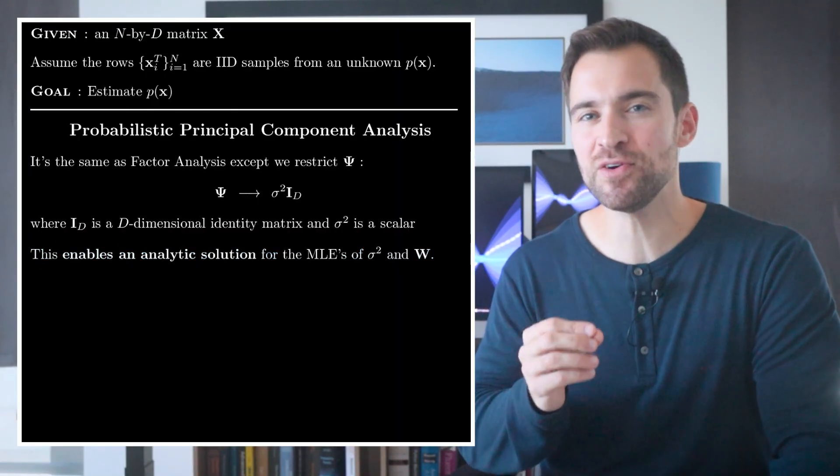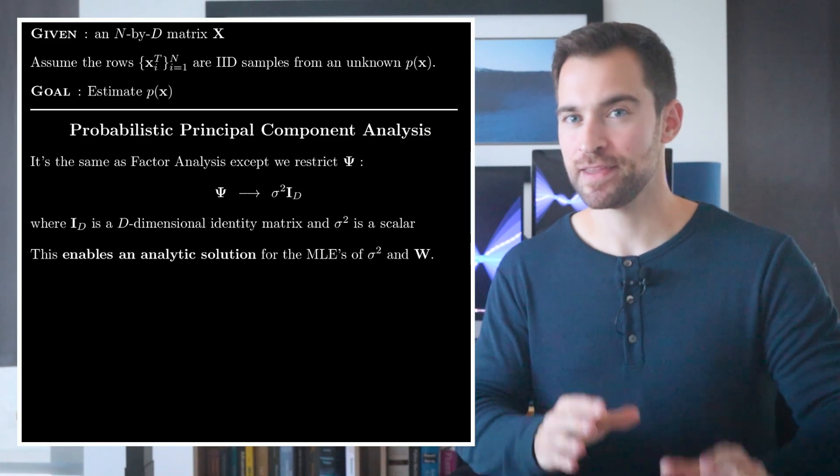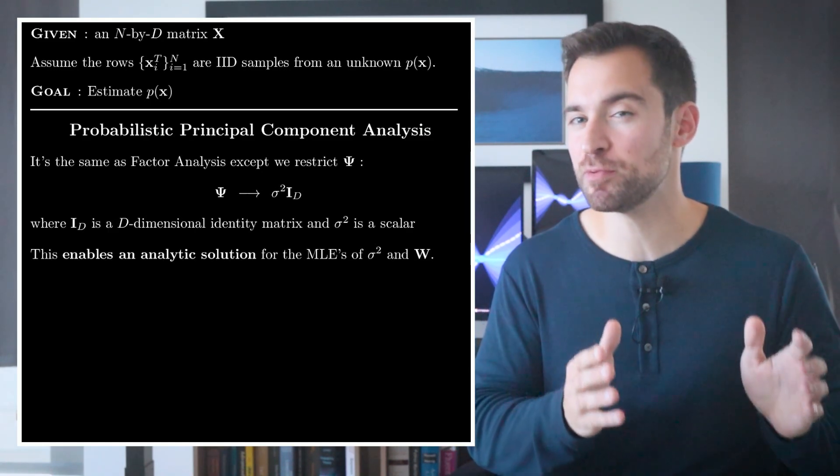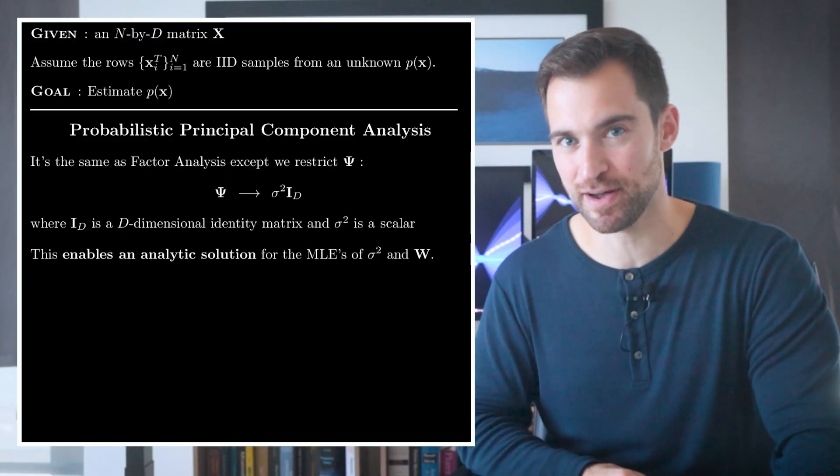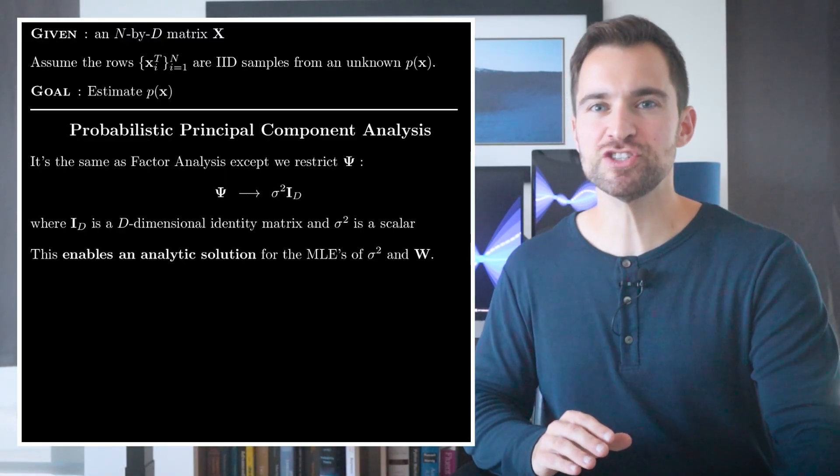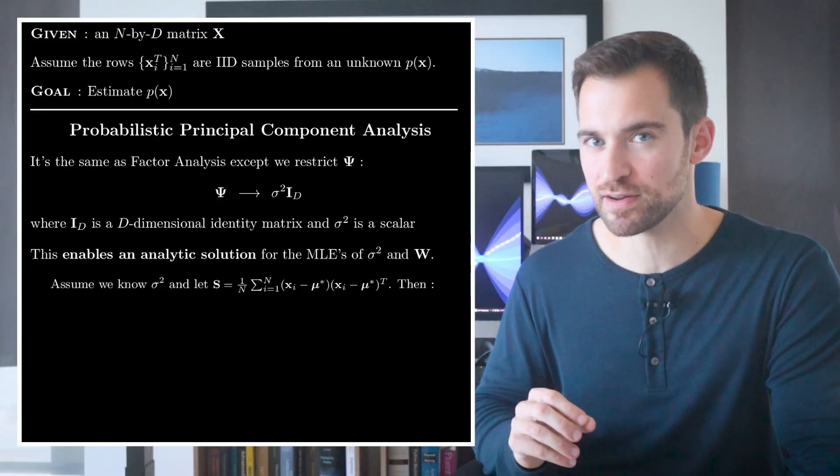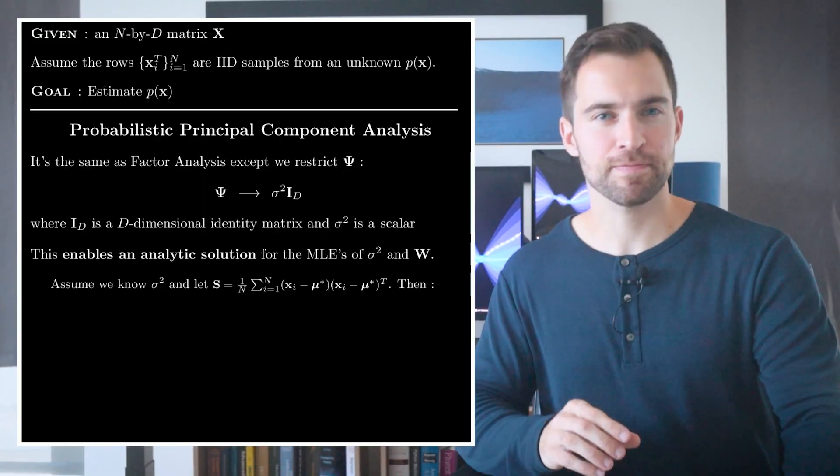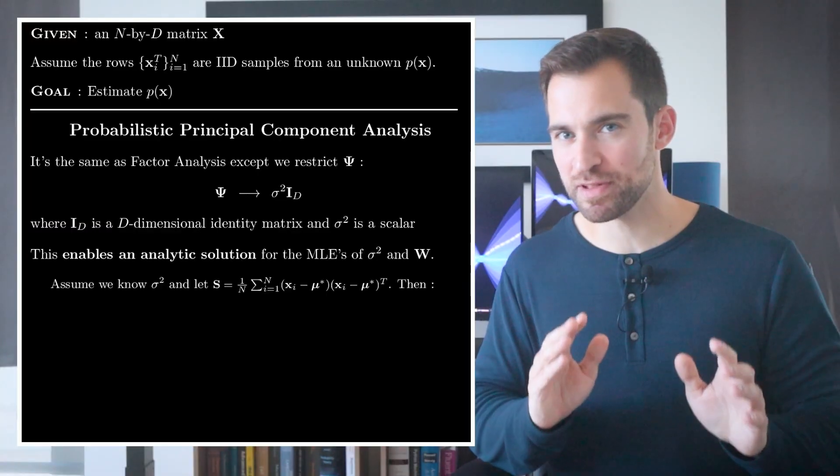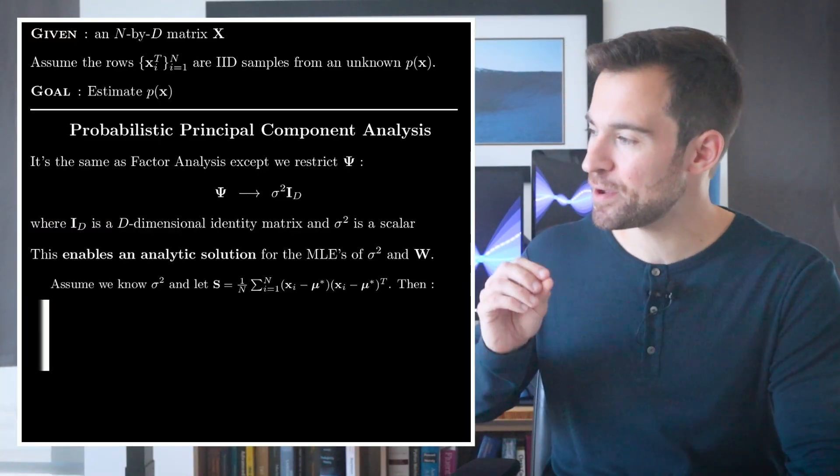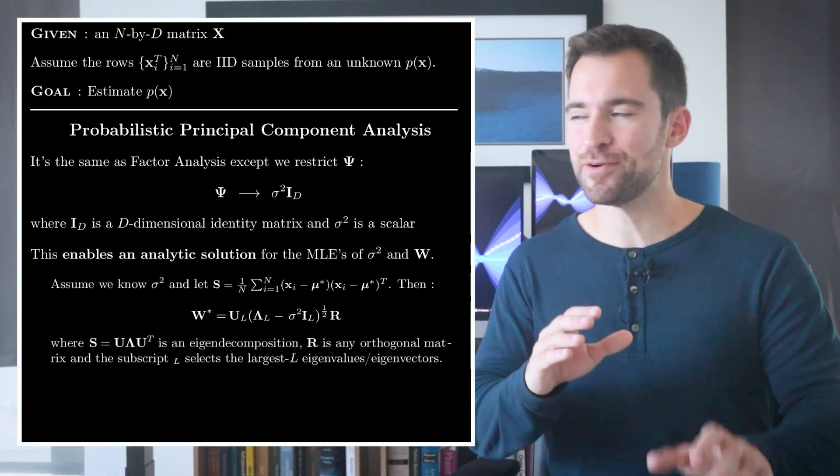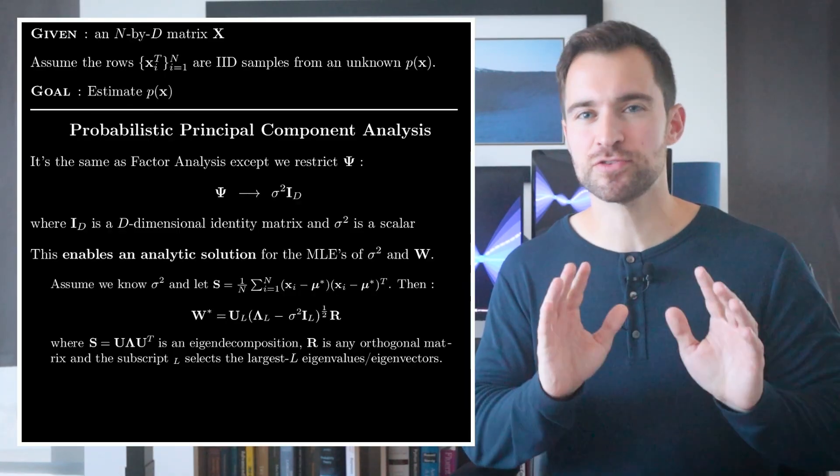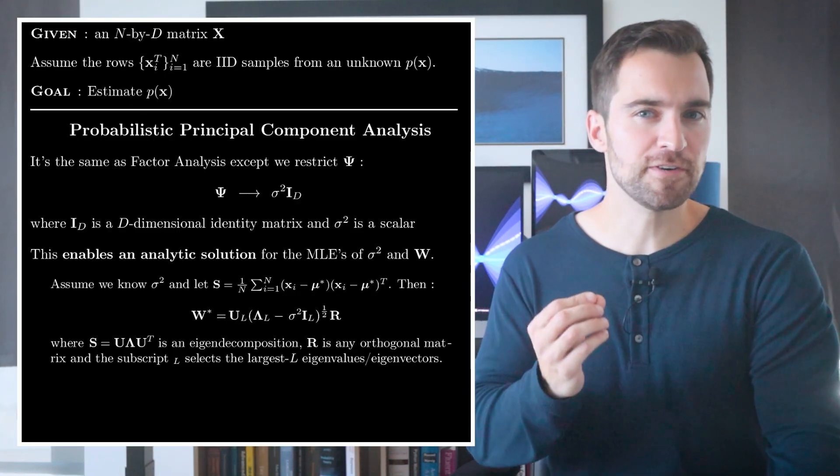Essentially, we only need to run a single eigenvalue decomposition. In other words, it's about an order of magnitude faster to fit a probabilistic PCA model than it is a factor analysis model. To see the solution, let's start by assuming we know sigma squared, and let S be the sample covariance matrix. In that case, the maximum likelihood estimate for w is given by this. Now, I'm not going to derive this. That would take us too far afield. What I will do is describe what it's saying.